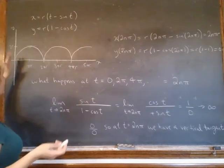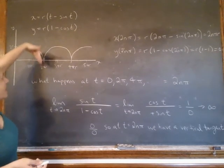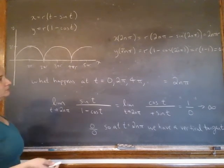So that's actually correct. That makes perfect sense. With my picture, when I go down 2 pi r, 4 pi r, 6 pi r, I'm going down on a vertical tangent.